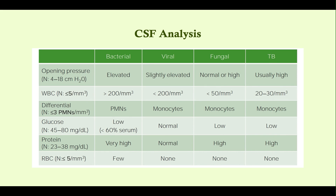Remember your CSF analysis — you need to know this for step one, two, and three. In bacterial meningitis, the white count is very high; in viral meningitis, not so much. Glucose is low in bacterial but normal in viral — bacteria consume sugar, so it's lower in bacterial. Protein is higher in bacterial because bacteria, like all cells, are full of protein, whereas viruses are not. Know this cold, as it will be very high yield.